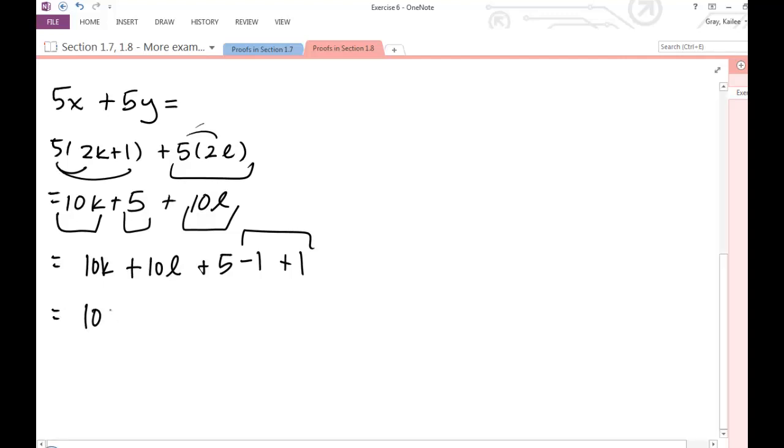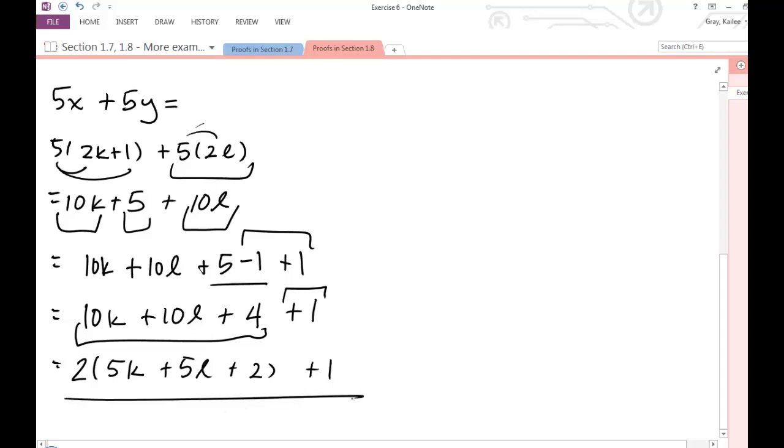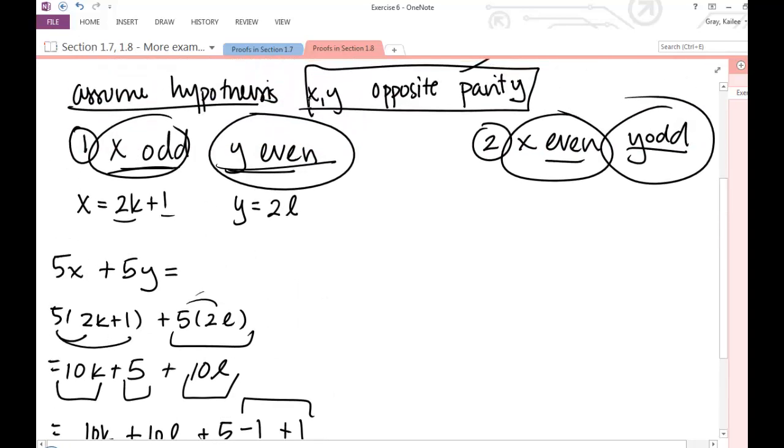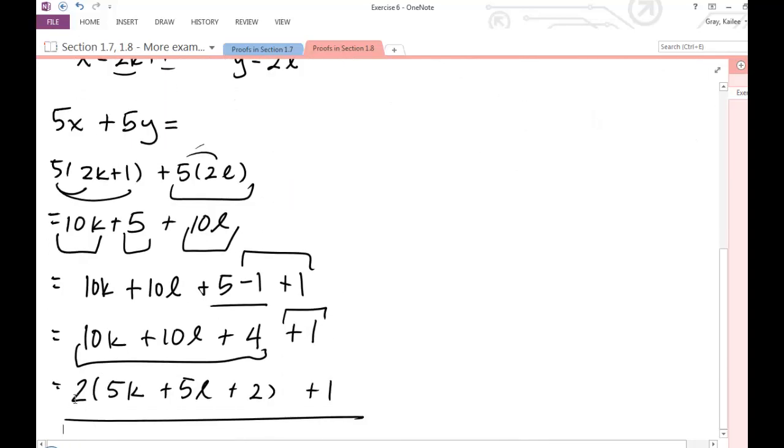So let's rewrite what we've got going on. So here's our even integer. Here's our even integer. Now we'll have another even integer write 4, and then we get that plus 1 that we were looking for. Now from these first three terms, I can factor out a 2. So I get 5k plus 5l plus 2 plus 1. And now I'm done. I've shown that if x is odd, y is even, I can rewrite 5x plus 5y as 2 times some integer plus 1.